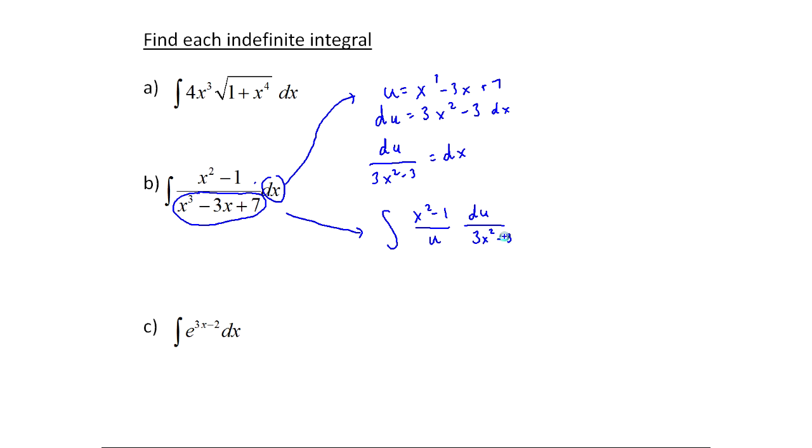Okay, when I first look at this, it looks like maybe my substitution didn't work because these aren't going to cancel out, but take a look at the term 3x cubed, or excuse me, 3x squared minus 3, I'm going to rewrite that a little bit. This is the integral of x squared minus 1 over u, and then it's du over 3 times x squared minus 1. I can factor out a 3. So it didn't look like things would cancel, but now look at this. We get rid of all the x's, because that's what we need.